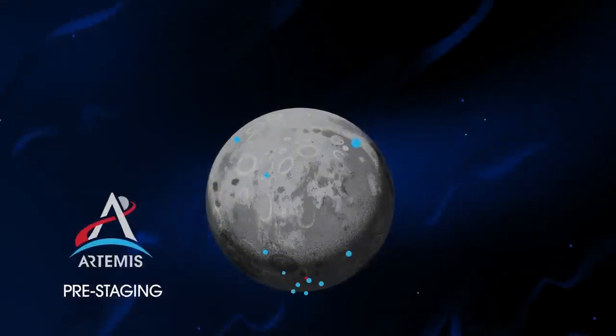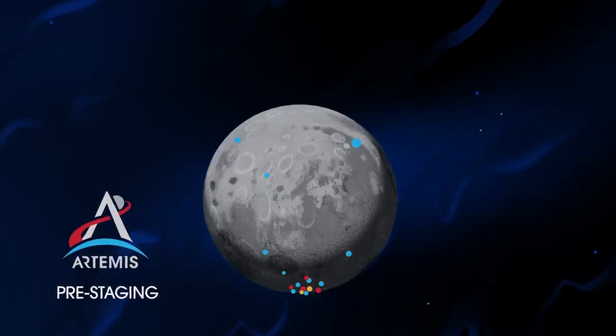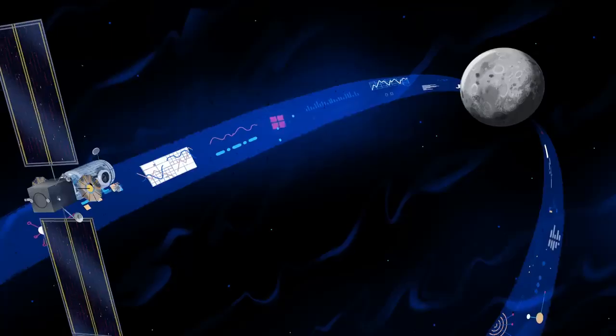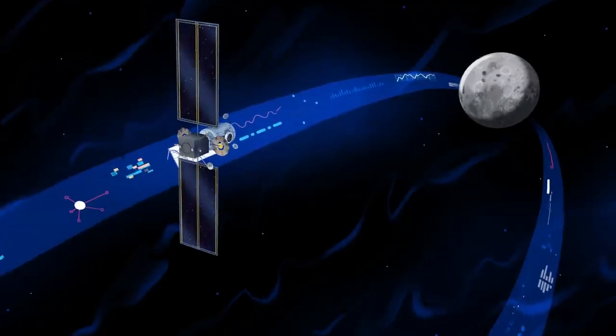Everything needed for lunar missions will be positioned in advance by commercial and international partners. This includes rovers, science experiments, and human-rated systems on the surface. But it also includes a dedicated lunar station in orbit around the Moon called Gateway.